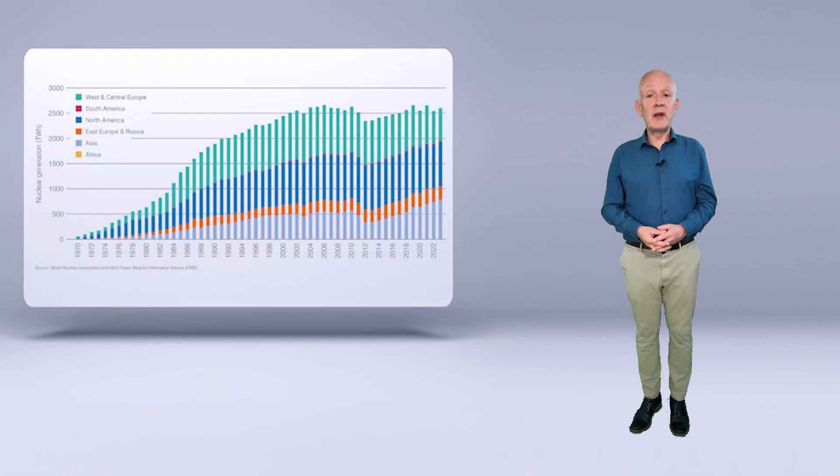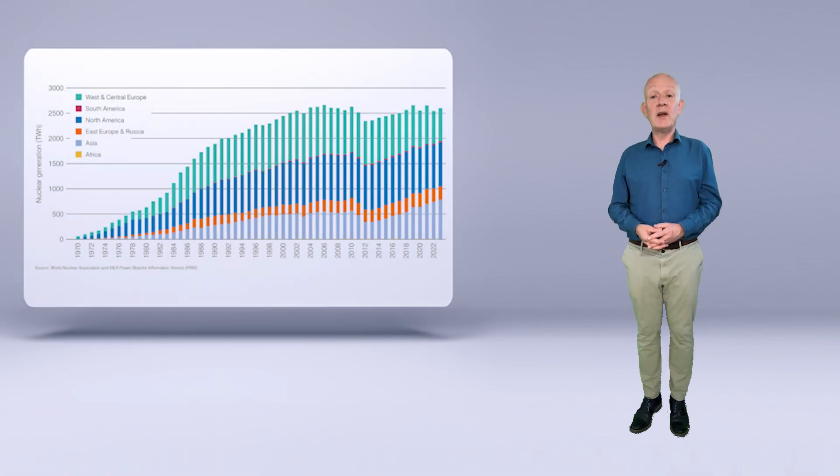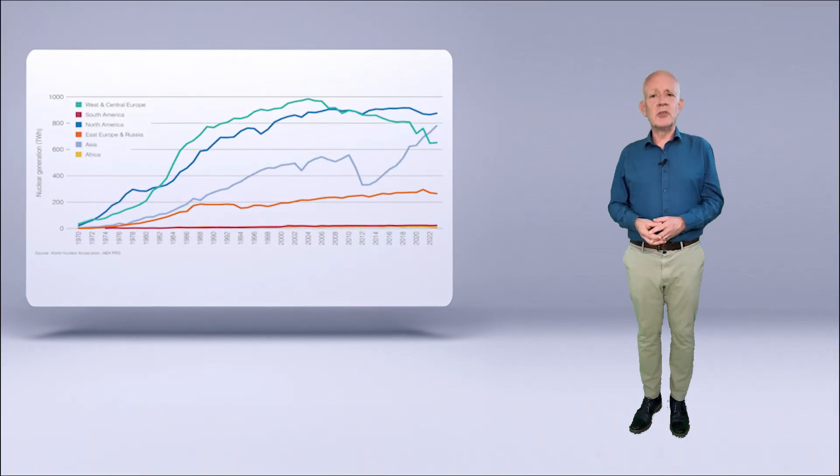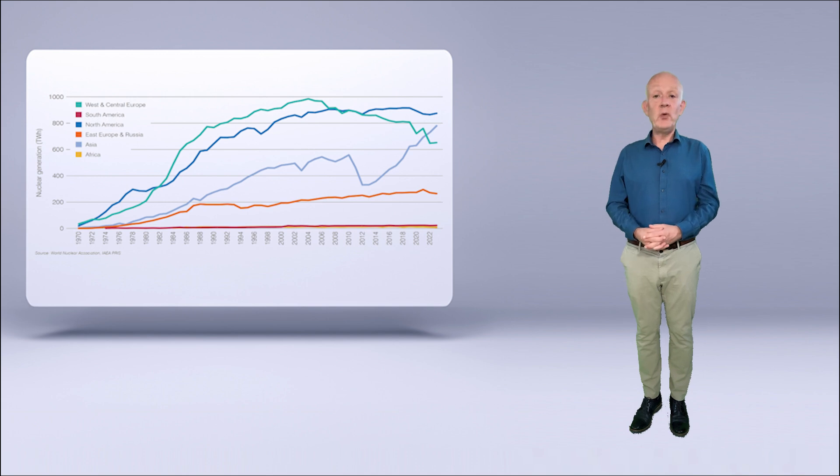Contributing to this growth in generation was a 42 terawatt-hour increase in France, recovering around half of the reduction in output caused by extended outages in 2022. This recovery should continue through 2024. Looking at nuclear output in different regions, generation continued to rise strongly in Asia, with new reactors in China, the United Arab Emirates, South Korea and Pakistan contributing to this increase.